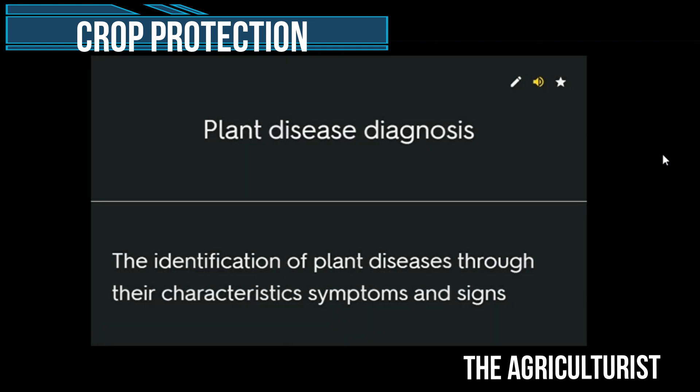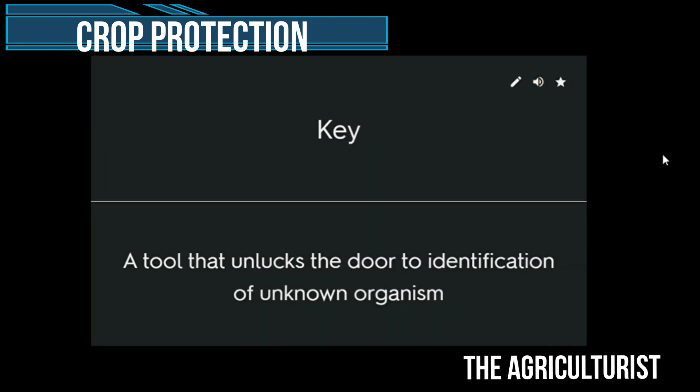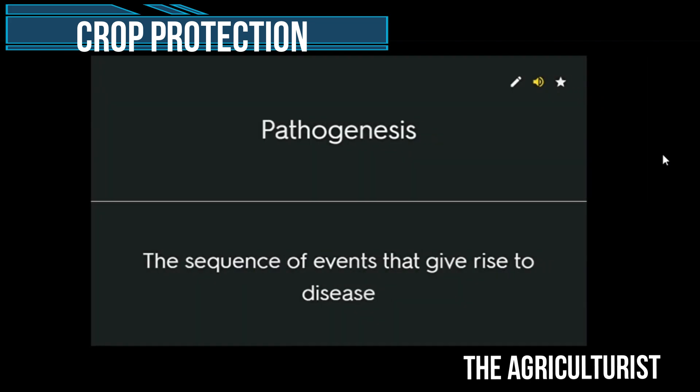Plant disease diagnosis — the identification of plant diseases through their characteristic symptoms and signs. Key — a tool that unlocks the door to identification of unknown organisms. Pathogenesis — the sequence of events that give rise to disease.